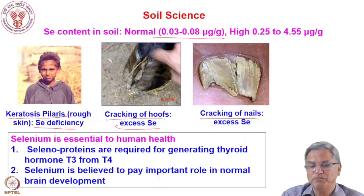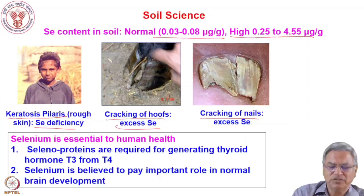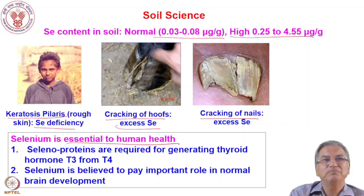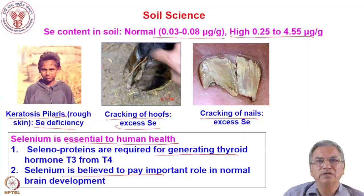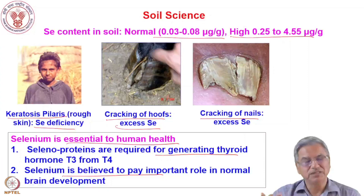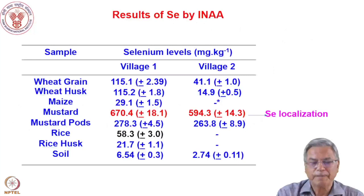Normal selenium concentration in soil is 0.03 to 0.08 micrograms per gram (ppb), but very high concentrations are also seen in some regions. While excess selenium is toxic, low concentration is also undesirable and leads to deficiency diseases. Selenoproteins are required for converting thyroid hormone T4 to T3, and selenium is believed to play an important role in brain development. It is again the story where an element is good for health, but deficiency or excess can lead to disease.